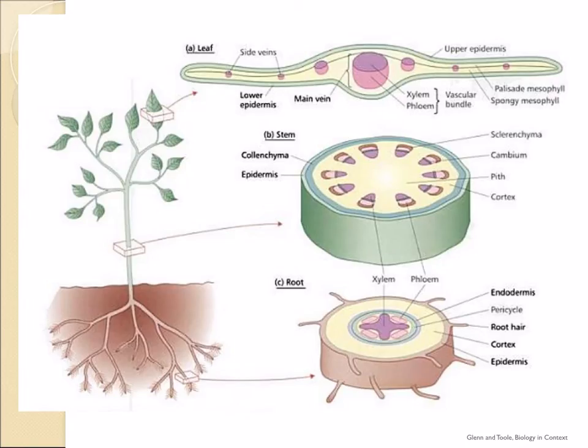Here you can see the distribution of the vascular bundles in the leaf at the top, the stem in the middle and the root at the bottom. Notice the location of the vascular bundles in each of these different parts. You will need to be able to identify the different structures under a light microscope, and you might be asked to draw a plan diagram of one of these in an exam.